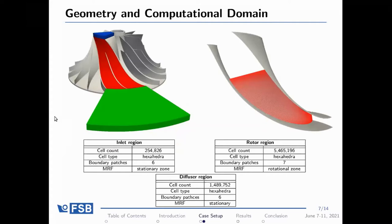Since master theses are limited in time, Máté chose to work with a stationary approach and simulate only a single blade passage. On the left is the geometry and on the right is the block-structured mesh — about 7 million cells — generated using the elliptic solver in Pointwise. It took about two months of iterating the mesh to achieve high quality.